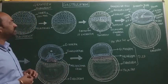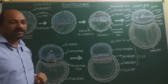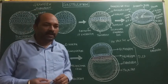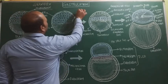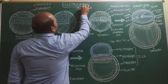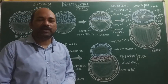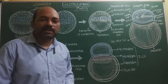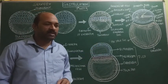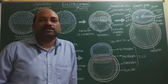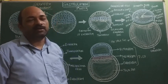After implantation, the next step in embryonic development is gastrulation. Gastrulation basically refers to the process of formation of the gastrula from the blastula. This process occurs in the third week after fertilization. The significance of gastrulation is the formation of the three germ layers — namely endoderm, ectoderm, and mesoderm — which are responsible for the formation of tissues and organs in the developing embryo.